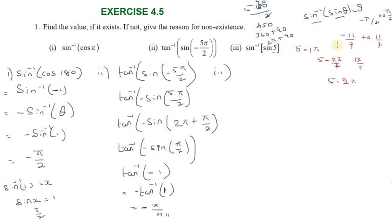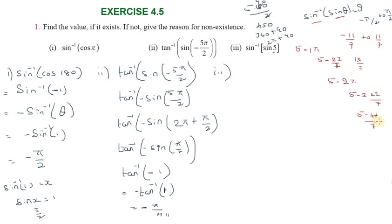We put 5 in the format 5 minus 2π. Computing: 5 minus 44/7 equals 35/7 minus 44/7 equals minus 9/7. So we work with 5 minus 2π, reducing it within the principal range.